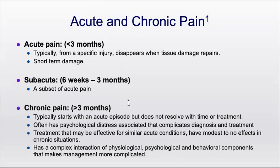Acute pain is anything that has occurred within the last three months, typically from a specific injury, and it typically disappears within that period. Once tissue damage repairs, you get significant and then marked improvement over time. Examples include rolling your ankle or a FOOSH injury — fall on an outstretched hand. Subacute pain has lingered a bit longer than six weeks but is still within the acute phase. Back pain is a good example; most mechanical back pain episodes are resolved in less than six weeks.